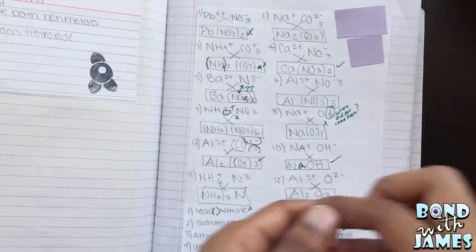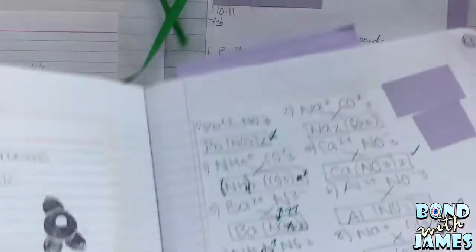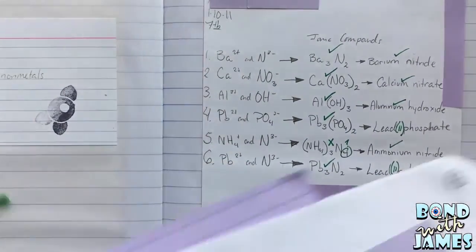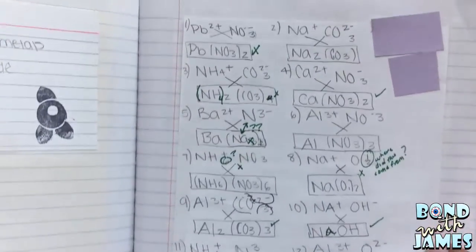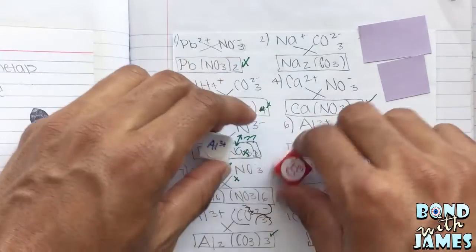The way I would do this in my class is depending on whether you were in an on-level regular class or a pre-AP class, you would either do 6 or 12 and students were responsible for rolling the dice.